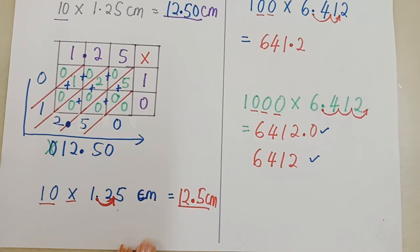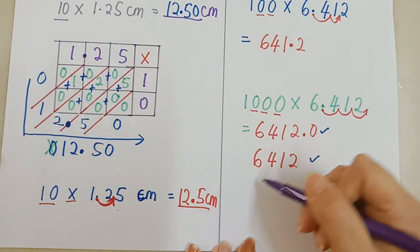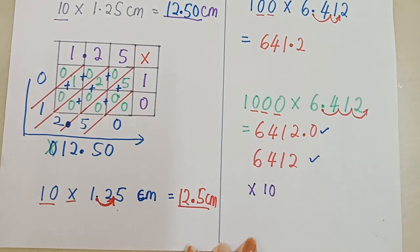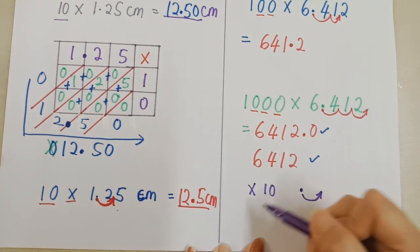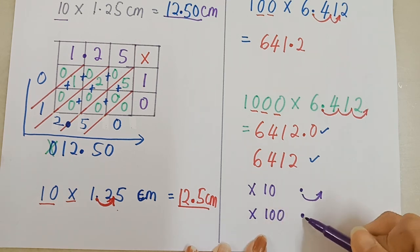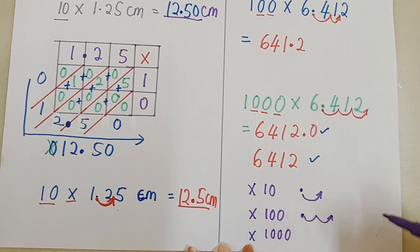Secara ringkasnya, kalau times 10, titik perpuluhan berada kat sini. Kita gerak ke kanan 1 step, 1 langkah. Kalau times 100, titik perpuluhan di sini. Kita move 2 step. Gerak 2 langkah ke kanan. Kalau times 1,000, titik perpuluhan di sini. Gerak 3 langkah. Move 3 step to the right side. Ke kanan. Itu saja.